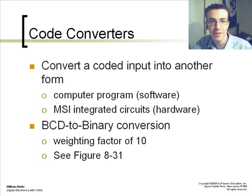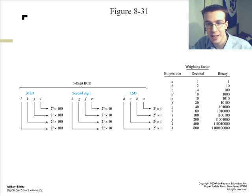In code converters, you convert a coded input into another form, such as a computer program or an integrated circuit hardware style type. The BCD to binary conversion has a weighting factor of 10. This is shown here, with its bit position versus decimal weighting factor, which increases by factor, and your binary as well, which increases.